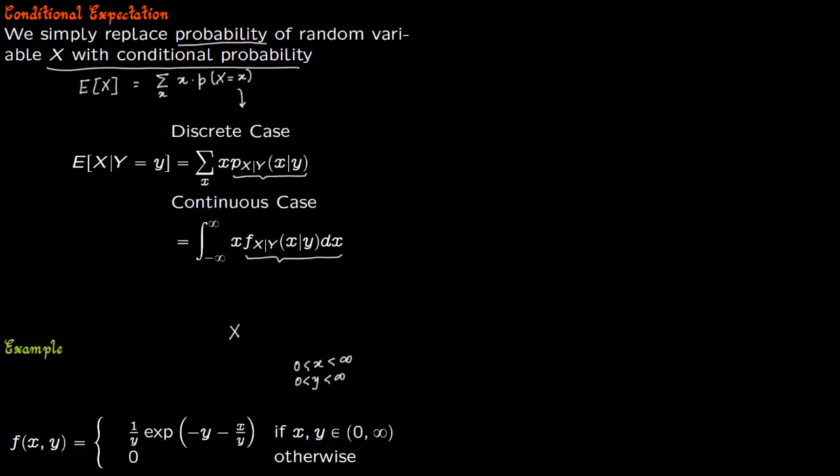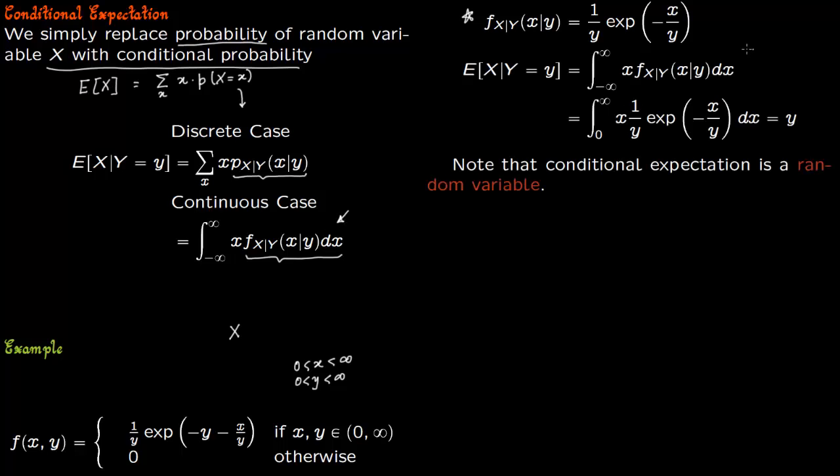We computed in the previous example the conditional probability is 1/y times exponential of minus x/y. So expectation is, we use this formula right here, just copy down this formula.